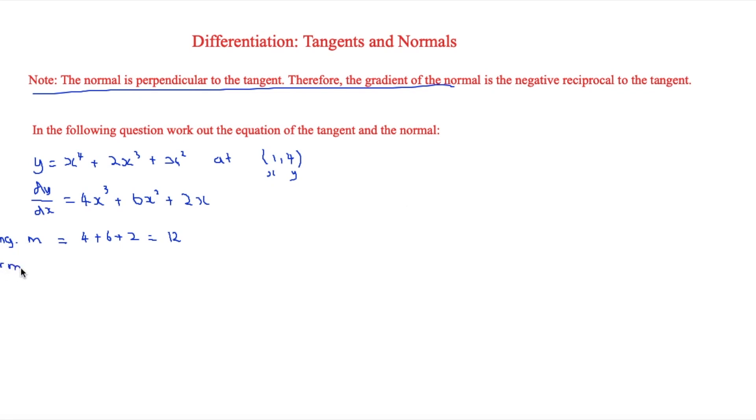So normal m is therefore equal - so if you're taking the reciprocal, we'd make it 1 over 12. So that's going to be minus 1 over 12.